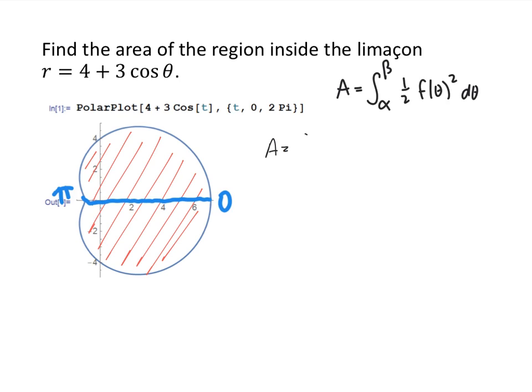So we set up our integral to be the integral from 0 to π of one-half times the function which is 4 plus 3 cosine theta squared d theta. But remember that because we use our symmetry we're going to take that answer and double it. So 2 times that integral is going to be our entire area. Conveniently the 2 and the one-half cancel each other out so we just get the integral from 0 to π.